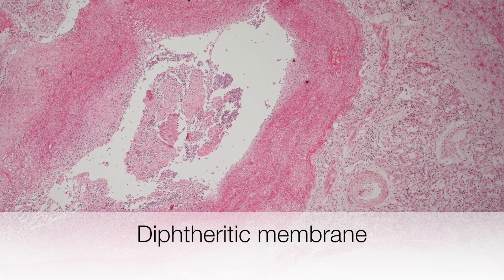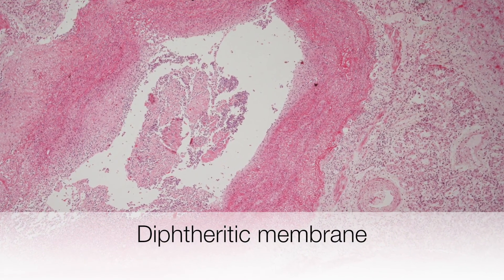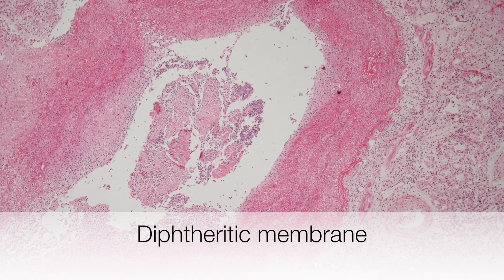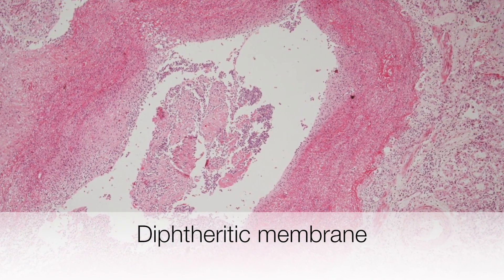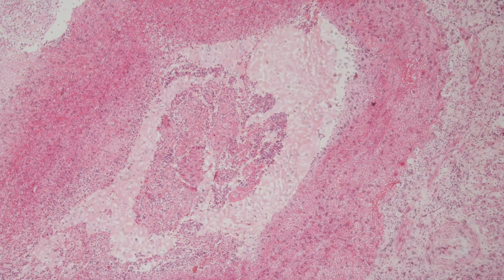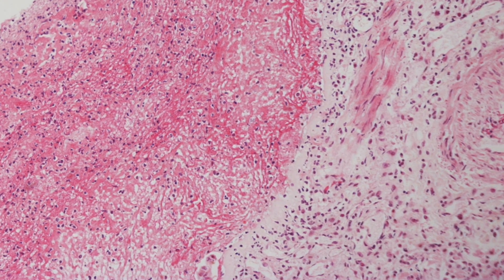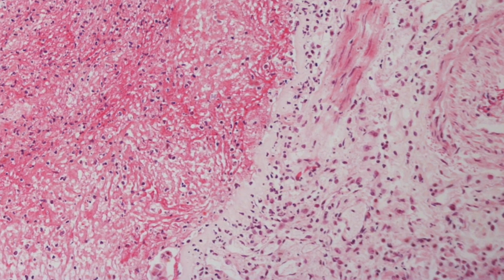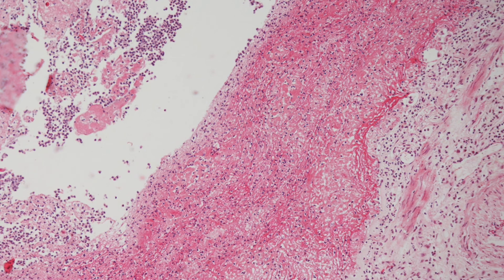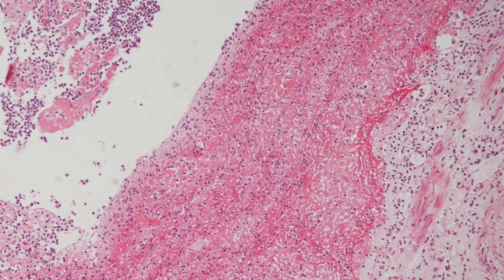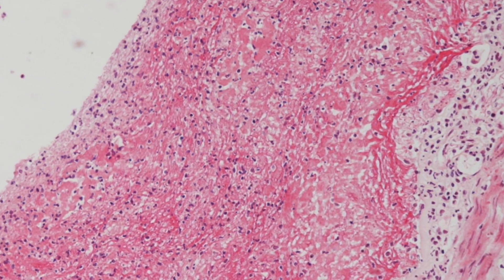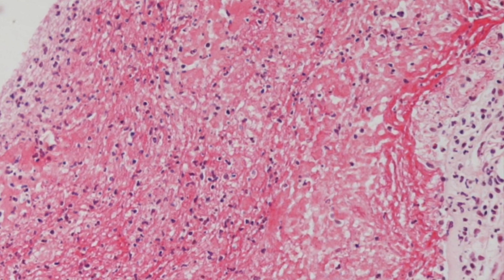This is a low-power view of a bronchus damaged by diphtheria toxin, which has produced a diphtheria membrane — the reddish ring visible towards the left of the picture. Beneath the membrane, the submucosa is edematous, acutely inflamed, and congested. On higher power, the membrane is composed of fibrin mixed with an acute inflammatory exudate, producing this pseudomembrane.